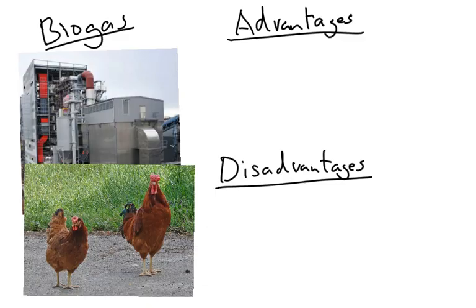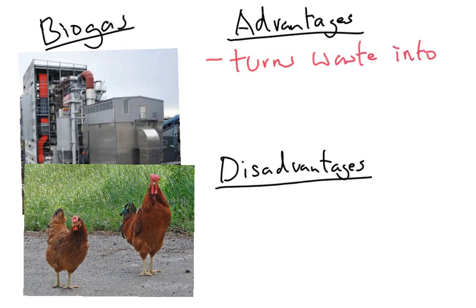Next we're talking about biogas. The advantages of biogas: they take a product — sometimes chicken waste or any kind of biodegradable matter — and they turn that into gas that can drive a turbine. So the advantage is that it turns waste into a fuel. One disadvantage might be that there's a limited supply of the material to burn.